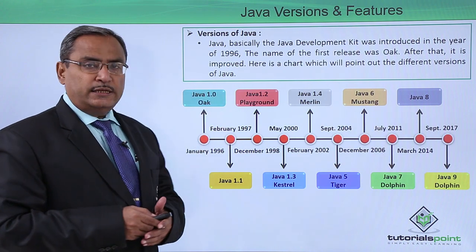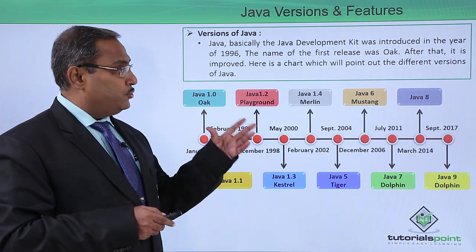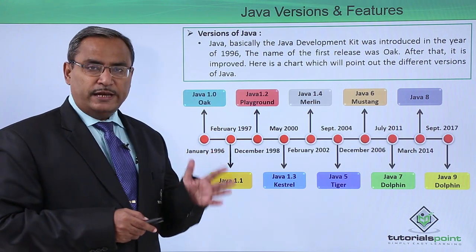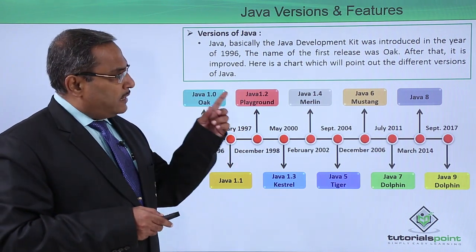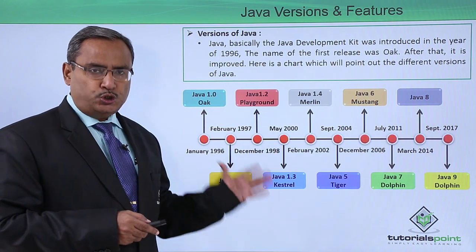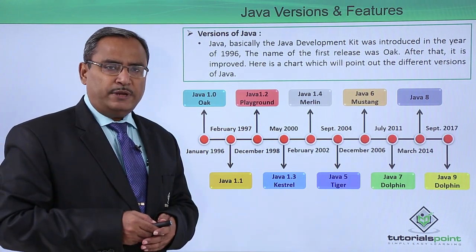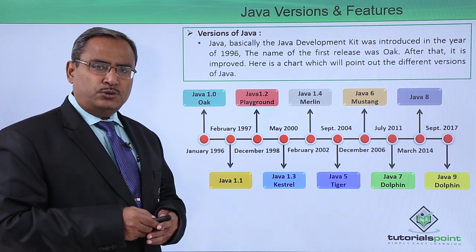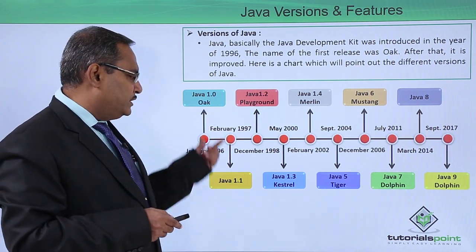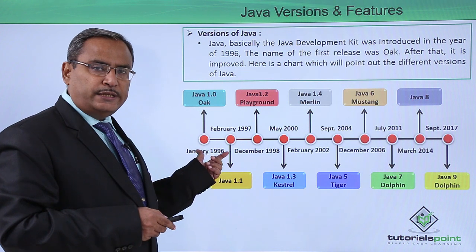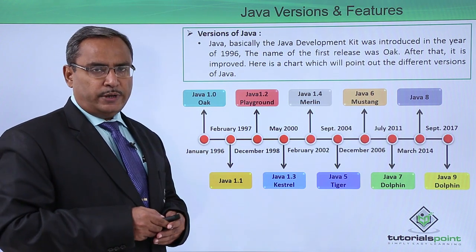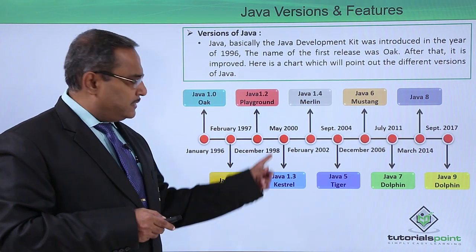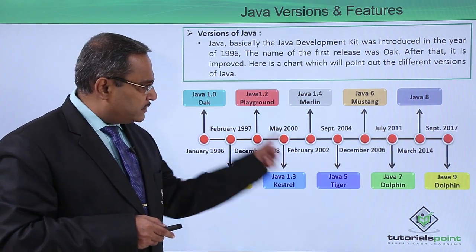Java — basically the Java Development Kit — was introduced in the year 1996, and the name of the first release was Oak. After that it improved, and here is the chart to show you how the versions came in the market. Java version 1.0 is Oak, published in January 1996, and in the respective different months and years you can find the different versions.